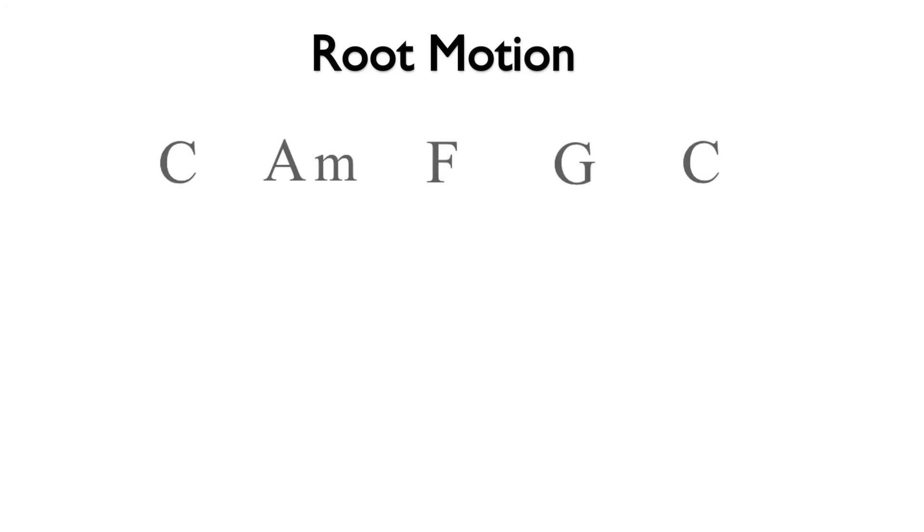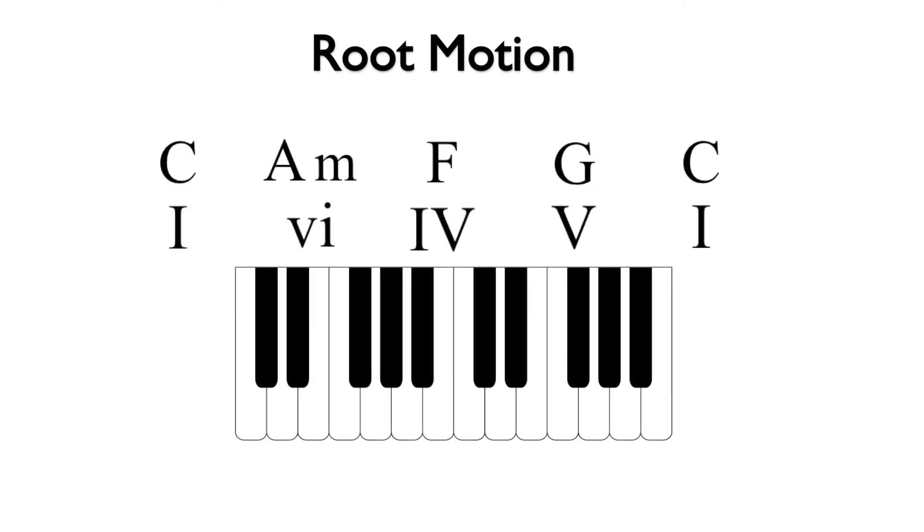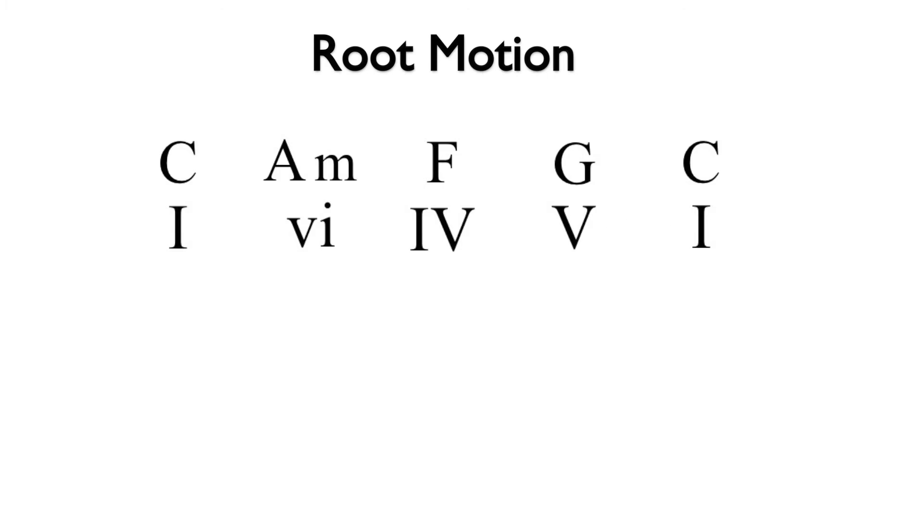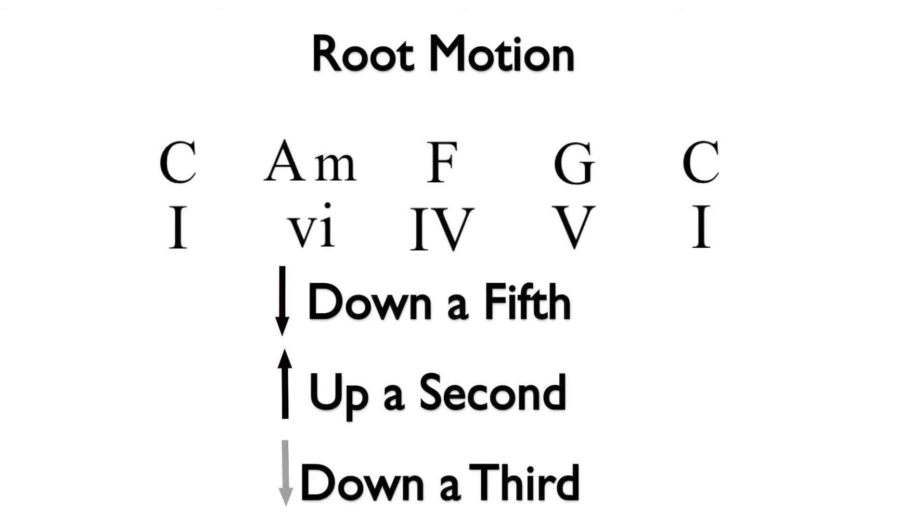Let's take a look at the following chord progression in C major: I, vi, IV, V, I. The progression begins with down a third root motion from I to vi. The down a third root motion continues with vi to IV. From IV, the progression moves up a second to V and finishes with down a fifth root motion from V to I. The progression makes use of all of the common root motions. Let's hear the progression.